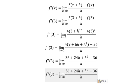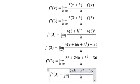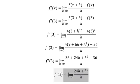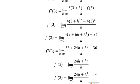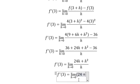Next, 36 minus 36, we cancel. Next, this one divides by h. So we have 24 plus h.